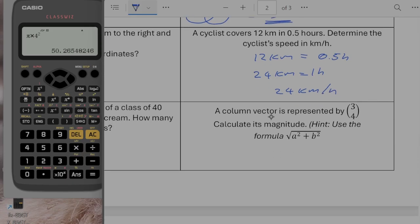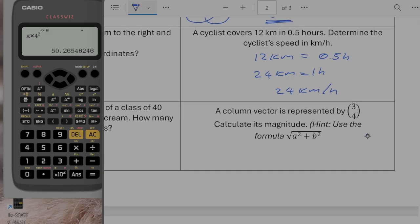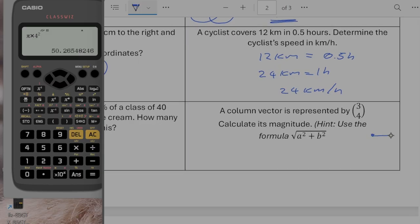And then a column vector is represented by 3, 4. Calculate its magnitude. So its magnitude is, if we imagine we've got 3 across and 4 up, its magnitude is the length of the hypotenuse. So it's going to be equal to the square root of 3 squared plus 4 squared, which is going to give us 9 plus 16, which is going to give us the square root of 25. So its magnitude would be 5.